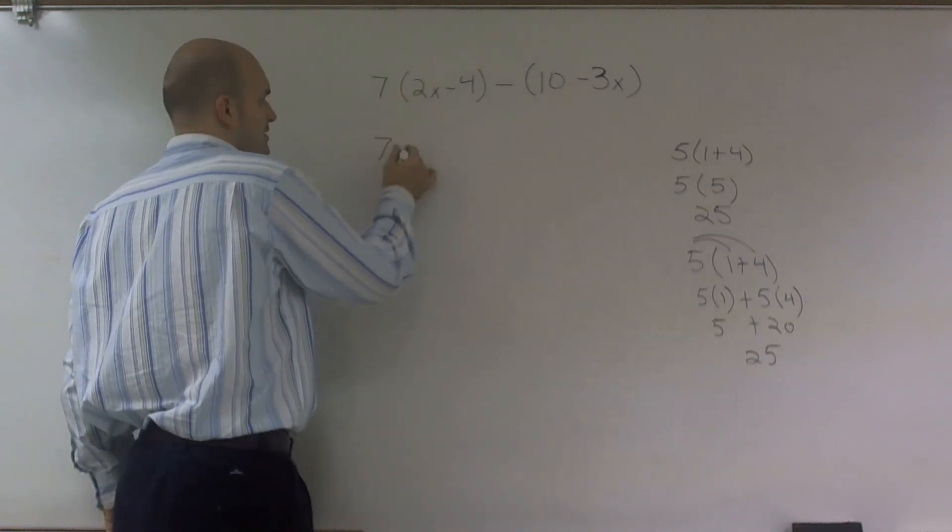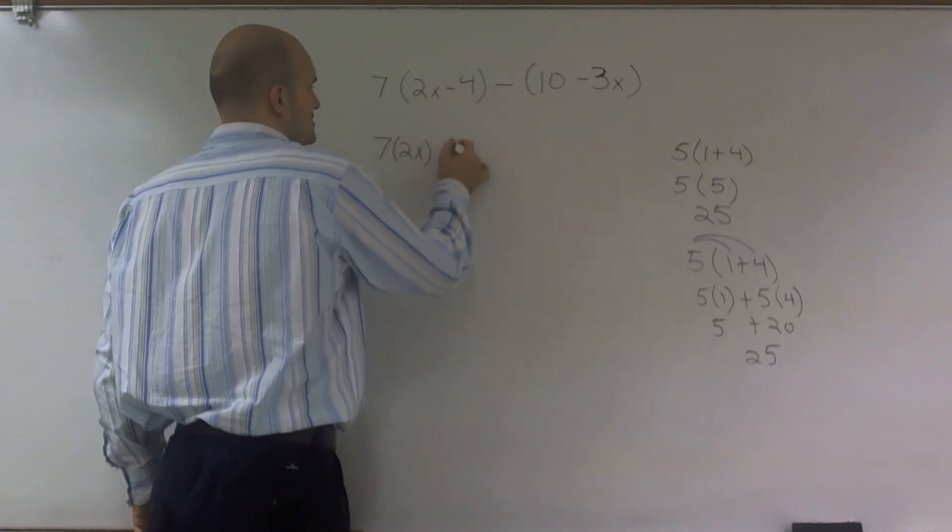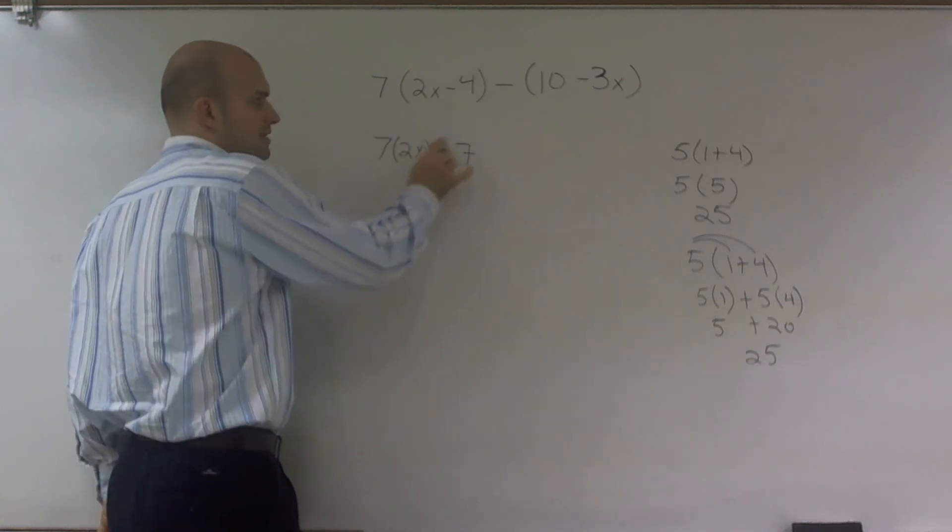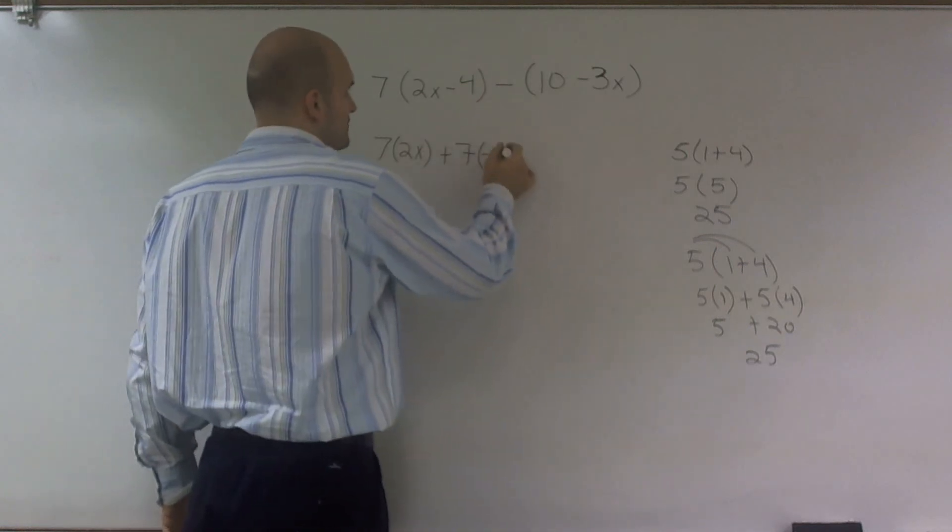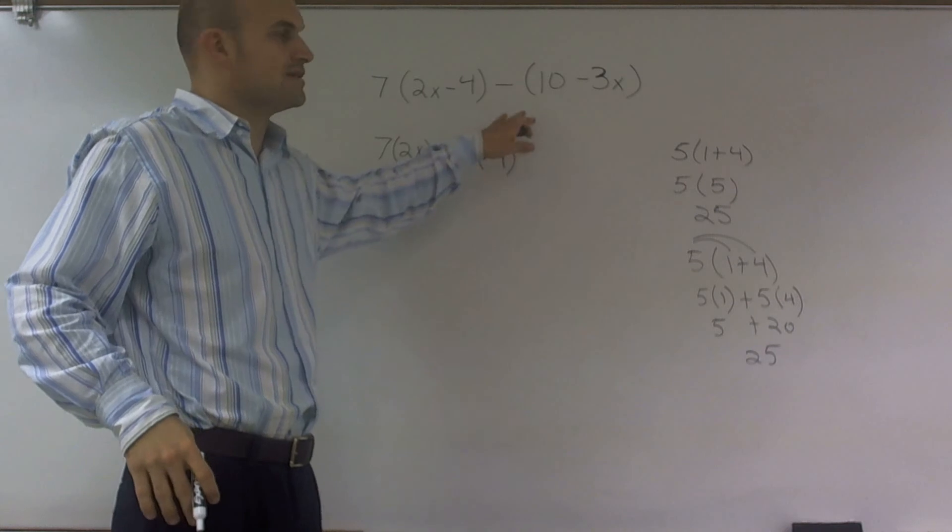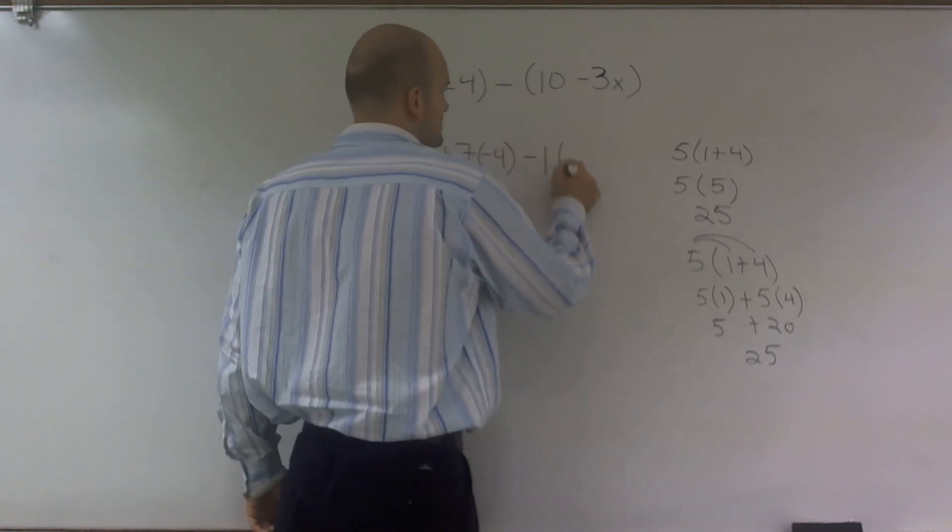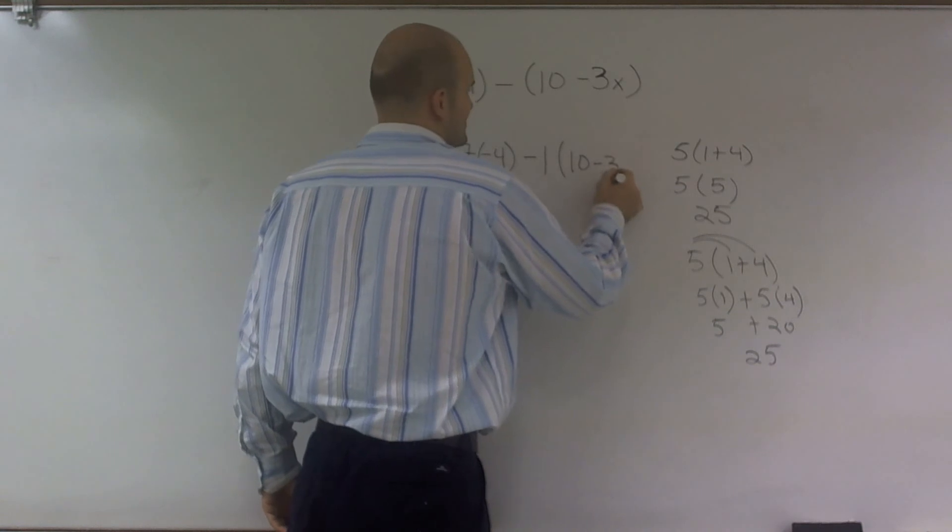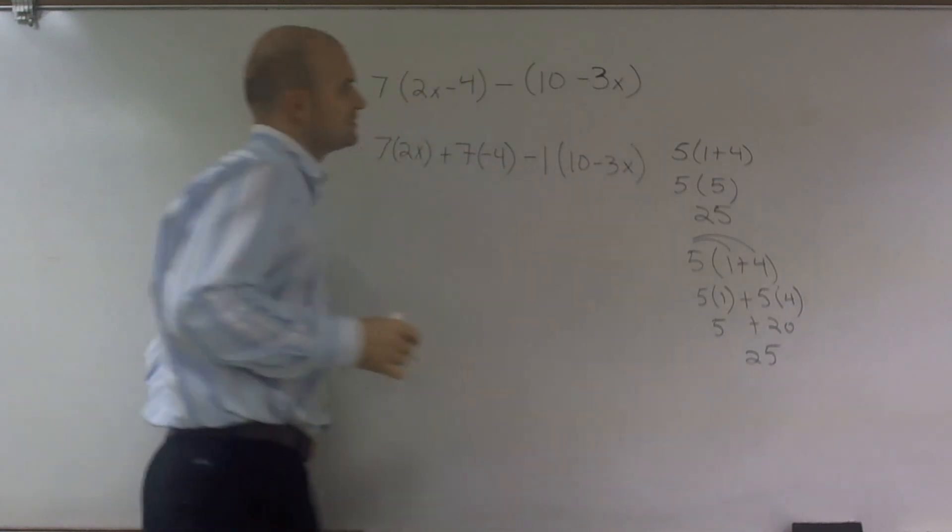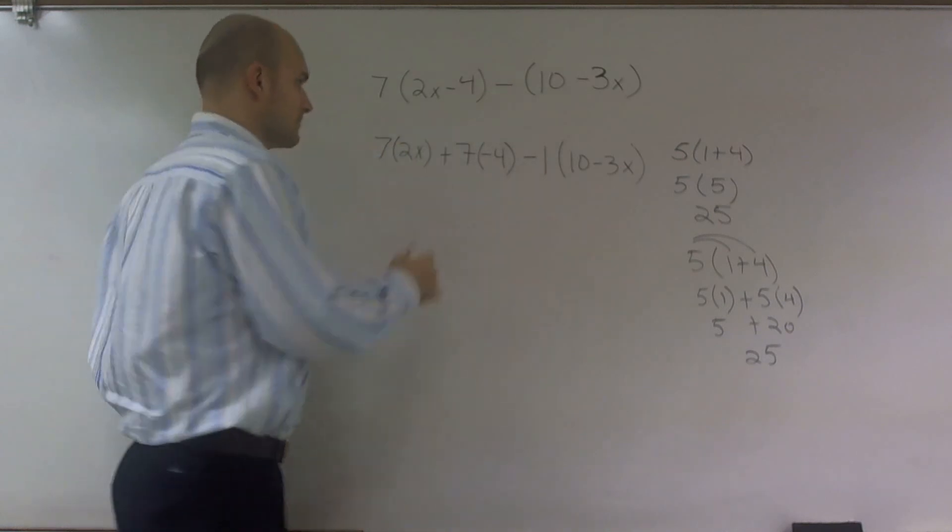I'll use the distributive property to give me 7 times 2x plus 7 times negative 4. And then here, if you have a negative sign, we can rewrite this as negative 1 times (10 - 3x), because that negative sign is the same thing as negative 1.